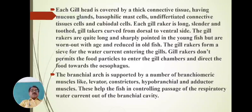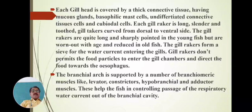Each gill head is covered by thick connective tissue having mucus glands, basophilic mast cells, undifferentiated connective tissue cells, and cuboidal cells. These parts are all present in the gill head. Each gill raker is long, slender, and toothed.